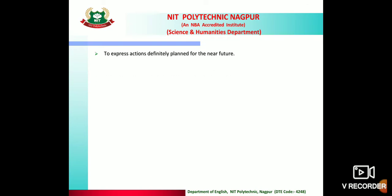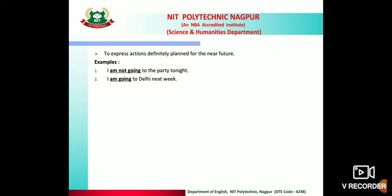Usage 3: to express actions definitely planned for the near future. For example: 'I am not going to the party tonight' — the party is in the evening, so it refers to the future. Another example: 'I am going to Delhi next week' — here also, the future plan is being discussed.